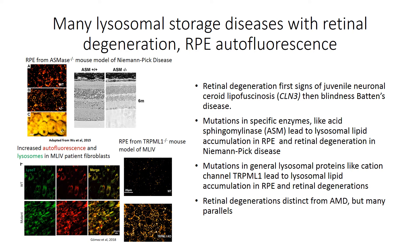Some of the strongest evidence linking lysosomal defects with age-related macular degeneration comes from parallels between lysosomal storage diseases and visual defects. For example, the first clinical sign of problems in juvenile CLN3, a form of Batten's disease, is retinal degeneration, which progresses to full blindness and then more global symptoms. Many of these lysosomal storage diseases result from mutations in specific degradative lysosomal enzymes — for example, acid sphingomyelinase defects can lead to accumulation of lipid in RPE and retinal degenerations in Niemann-Pick disease.